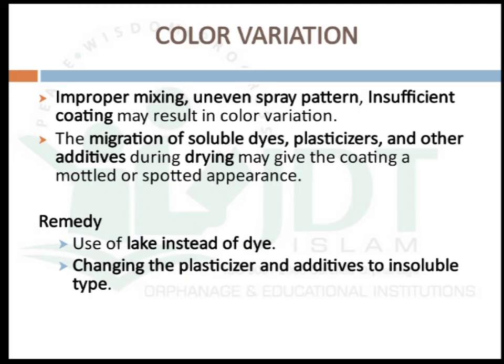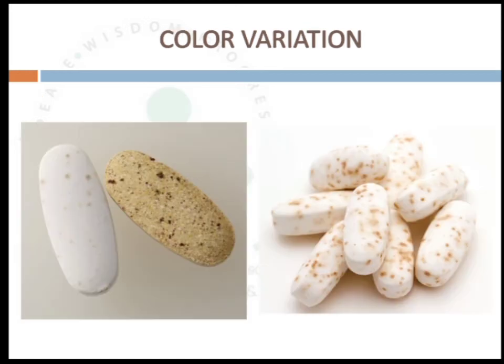The next defect is color variation. Improper mixing, uneven spray pattern, and insufficient coating may result in color variation. The migration of soluble dyes, plasticizers, and other additives during drying may give the coating a mottled or spotted appearance. This can be rectified by using lakes instead of dyes, or by changing plasticizers and additives to an insoluble type. This is a picture showing color variation or the mottled effect.